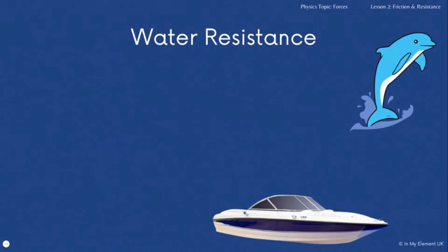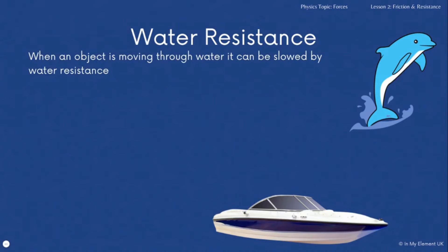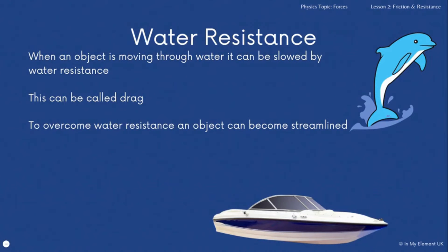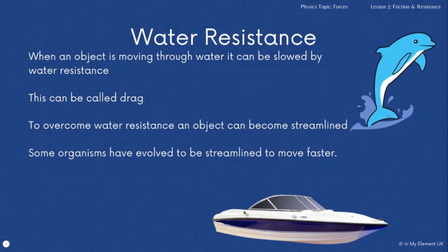Another type of resistance is water resistance, which will also slow an object down. One way to overcome it is for the object to become more streamlined. If an object is moving through water it can be slowed by water resistance — also called drag. The boat shown is a great example: look at how pointed and smooth the front is. It is streamlined to cut through the water so there is less water resistance and it can move quicker.